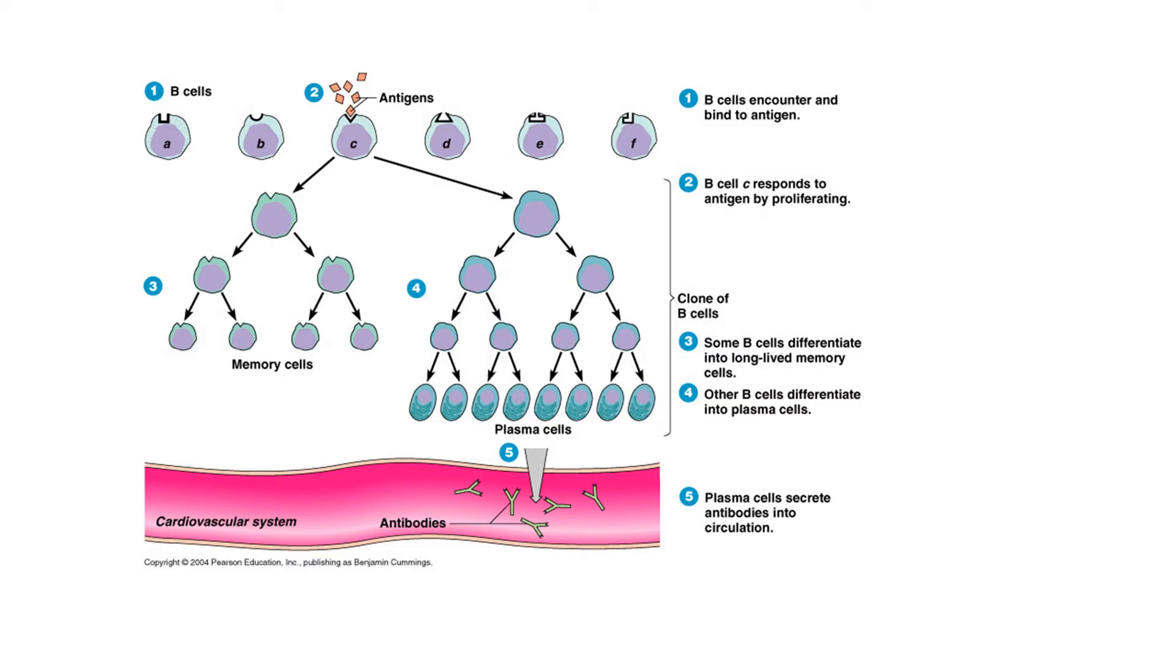Here in our picture, we have a bunch of different B cells. Each one of them has a unique B cell receptor. Our antigen is going to select whichever of these B cells that has the correct receptor for the antigen to bind into. So in this case, this antigen selects this B cell because the antigen fits into the B cell receptor.